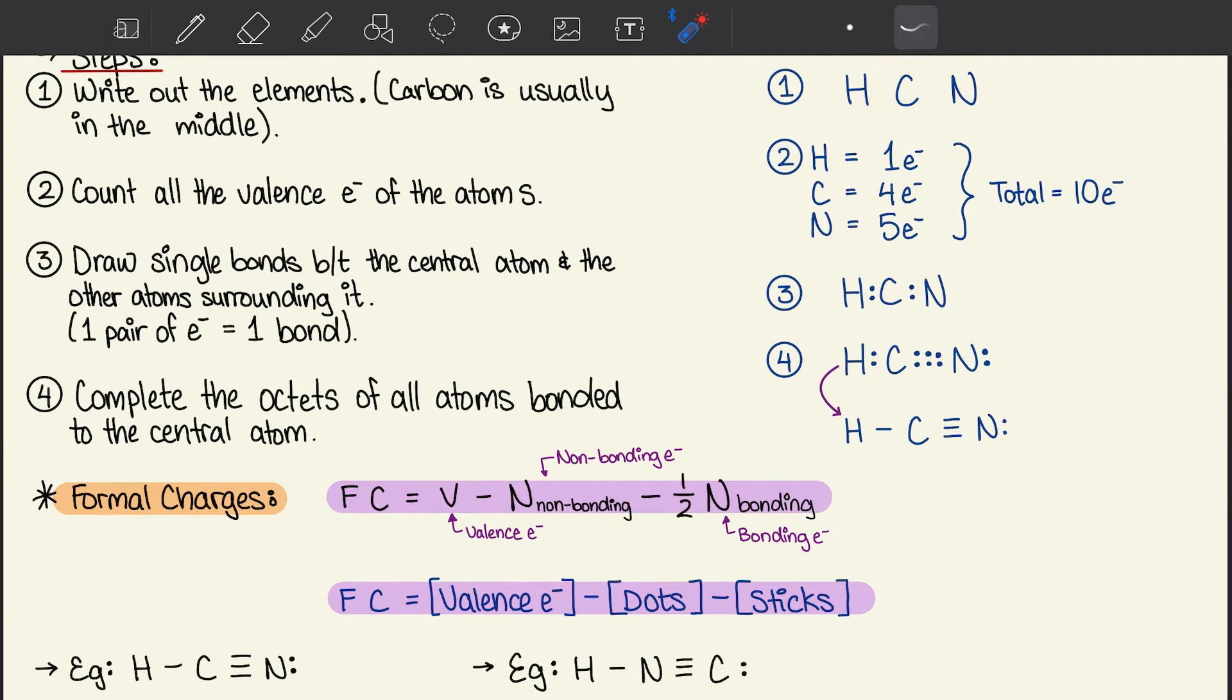Step two: count all the valence electrons of the atoms. We know hydrogen has one, carbon has four in its valence, and nitrogen has five, making a total of ten electrons. Step three: draw single bonds between the central atom and the other atoms surrounding it. One pair of electrons equals one bond. So that's two electrons. For step three, I have H with two electrons, so that's one pair, one bond, one single bond. Then carbon, then another two electrons creating one single bond, and then nitrogen.